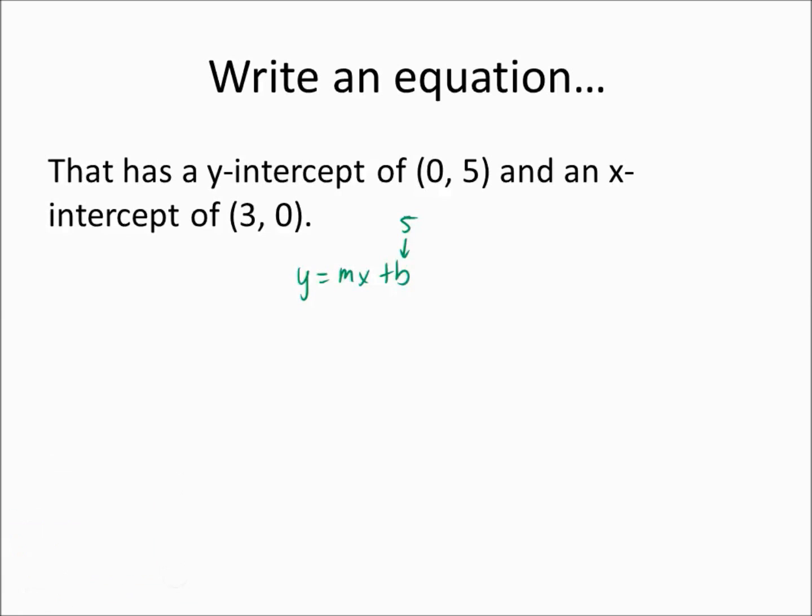Well, you've got a couple of different options. One of those options is you can just do what we just did. You can take the 3 and put it in for x, and the 0 and put it in for y, and then solve for m. Watch. If I go 0 equals, I don't have m, but I do have 3m plus 5. Then I subtract 5, and then I have -5 equals m times 3. Divide by 3. Then I've got m equals -5 over 3.